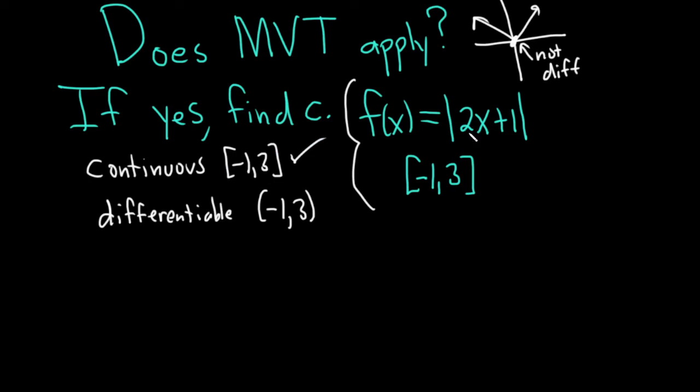In order to find that, we can set what's inside the absolute value equal to zero. Let's find out where that sharp edge is. We'll take 2x+1 and set it equal to zero to find that point of non-differentiability.